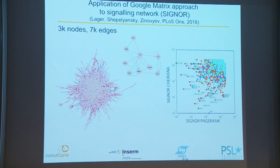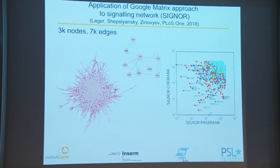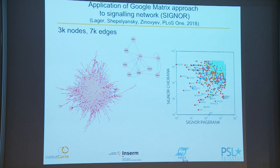Now I move to our collaboration with Dima, Jose, and Klaus on applying the Google Matrix and reduced Google Matrix approach to biological networks. In several studies we exploited the idea of reduced Google Matrix. We applied it to reconstruction of a signaling network called SIGNOR — a relatively small network containing 3,000 nodes and 7,000 edges. This is a typical hairball obtained after application of force-directed layout algorithms. On the PageRank–CheiRank plane, you see no correlation between PageRank and CheiRank, which is a typical characteristic of biological networks.